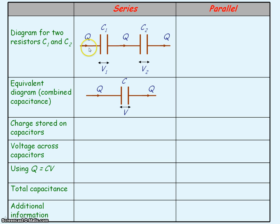Looking at the charge stored on our two capacitors, we'd say it's the same charge Q. That's because current is the same in series, and current is the rate of flow of charge. So if you have the same current in series, then the rate of flow of charge will be the same, meaning the same charge will be stored on series capacitors.